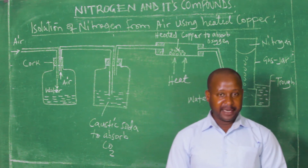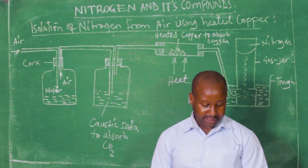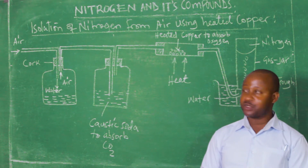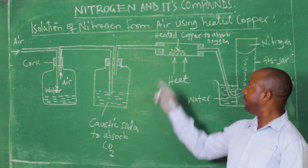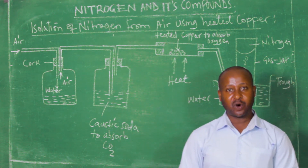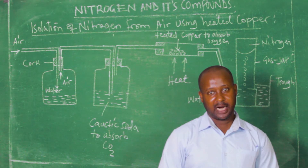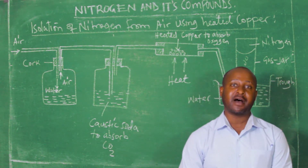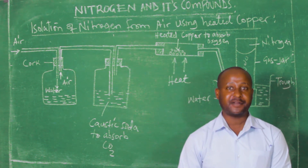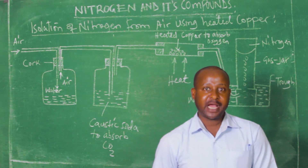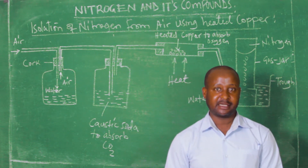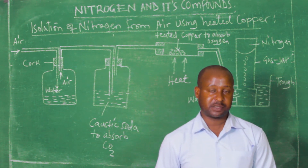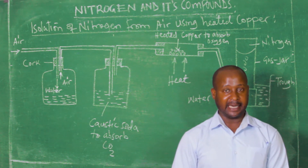Then we have the combustion tube, which contains heated copper metal. This heated copper metal reacts with oxygen gas, producing copper oxide, which is black in color.